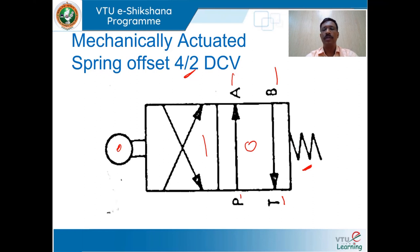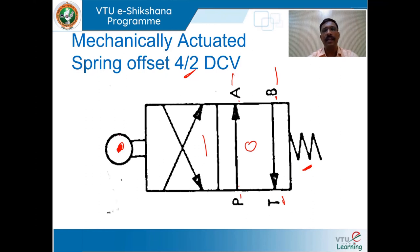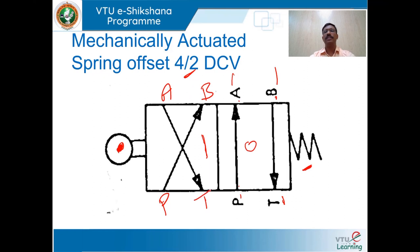In the spring-offset mode, P is connected with A and B is connected with T. When roller operated — mechanically operated — the roller is connected to the spool, and when in this envelope configuration it moves to position 1, P connects with B and A connects with T. This is how a mechanically actuated spring-offset four-way directional control valve symbol looks.